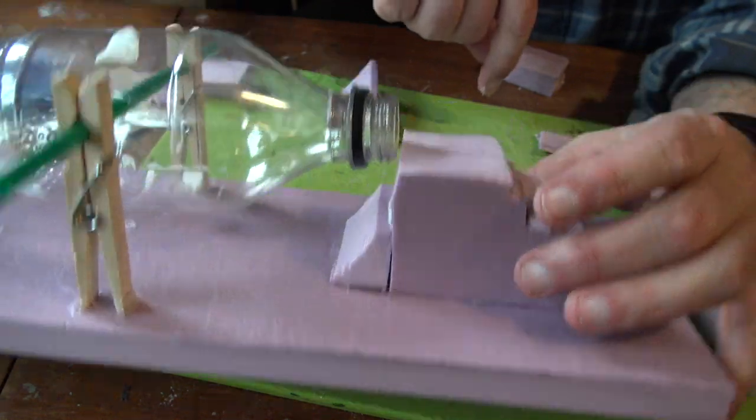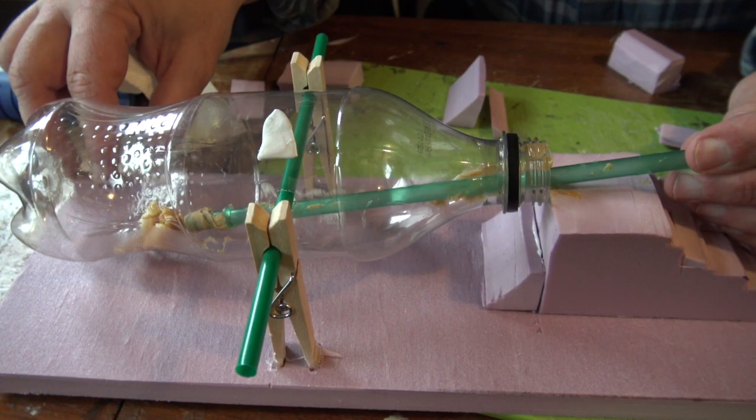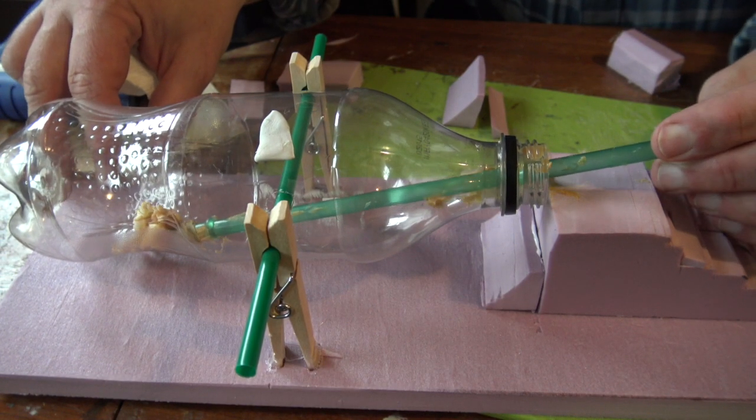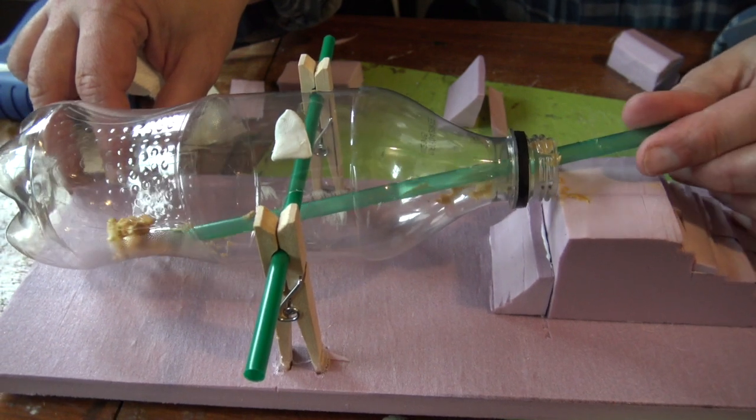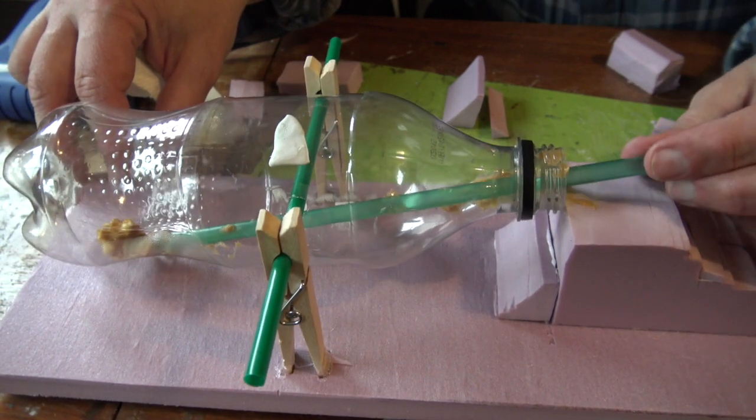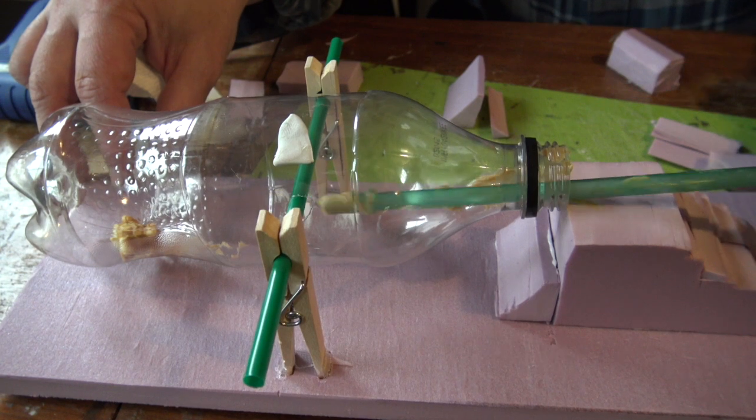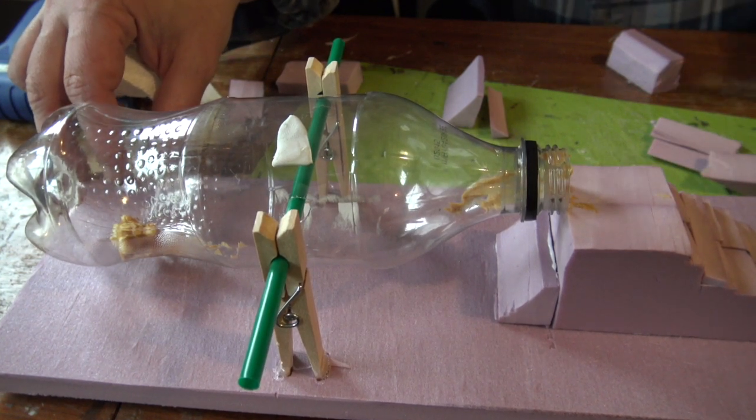Time to bait our trap. Here is a tasty mouse treat. It is a piece of popcorn smothered in peanut butter. We just push it in there, remove the straw, and we have baited our trap.